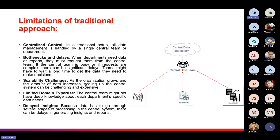Next is scalability challenges. As the organization grows or the amount of data increases, scaling up the central system can be challenging and expensive. Next is limited domain expertise — the central data team might not have deep knowledge about each department's specific needs. The lack of domain-specific knowledge can affect the quality of data solutions provided, as departments might not get useful data because the central team doesn't have enough knowledge for complex domain-specific queries. Next is delayed insights — because data has to go through several stages of processing in the central system, there can be significant delays in the insights and reports generated by analysts.